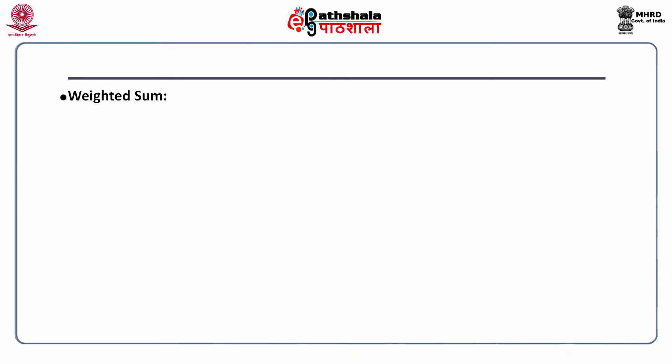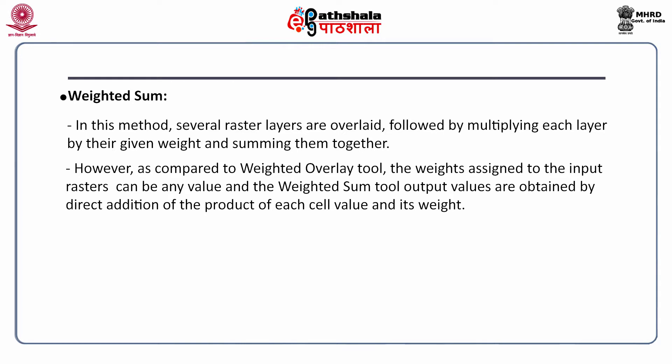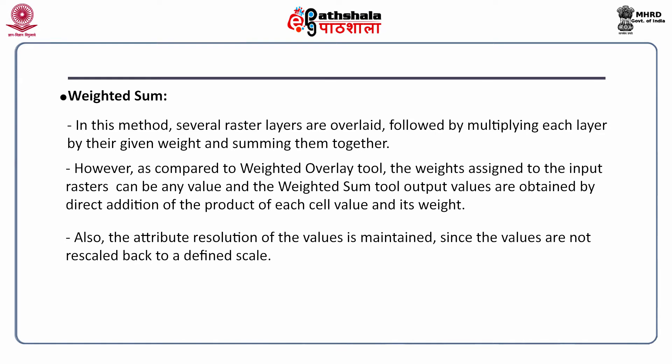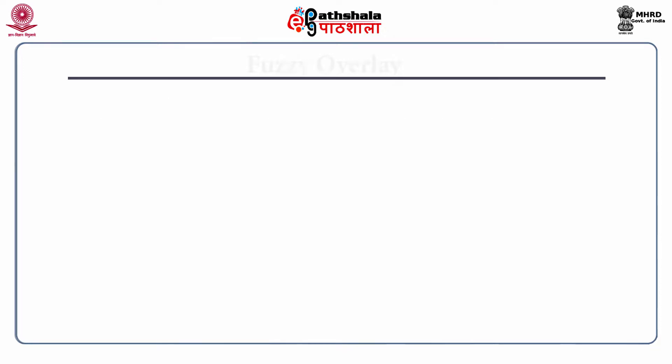The next tool is the weighted sum tool. In this method, several raster layers are overlaid, each multiplied by their given weight, and then summed together. However, compared to the weighted overlay tool, the weights assigned to the input rasters can be any value, and the weighted sum tool output values are obtained by direct addition of the product of each cell value and its weight. Also, the attribute resolution of the values is maintained since the values are not rescaled back to a defined scale.